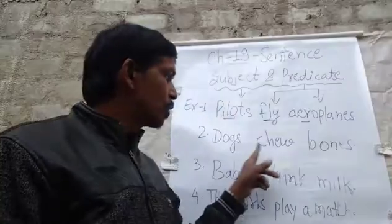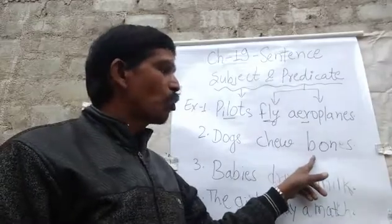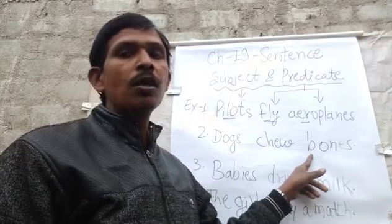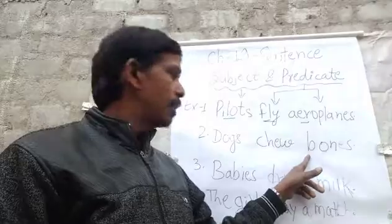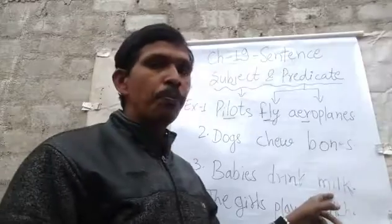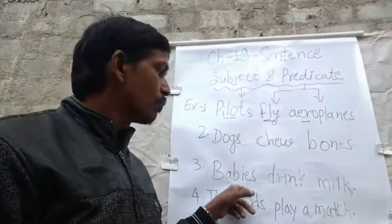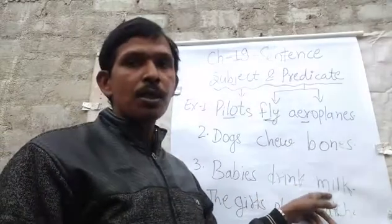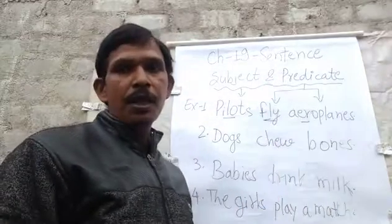Another sentence: dogs chew bones. 'Dogs' is the subject, 'chew' is the verb, 'bones' is the object, and both verb and object make the predicate. Another example: we drink milk. 'We' is the subject, 'drink' is the verb, 'milk' is the object.